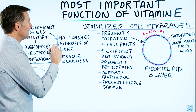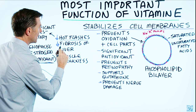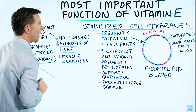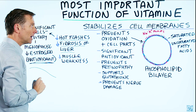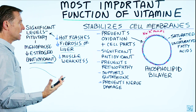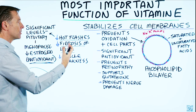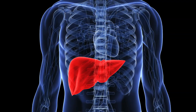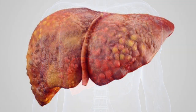Vitamin E has also been shown to decrease fibrosis of the liver because it's an antioxidant. Fibrosis occurs from all the free radical damage and inflammation in the liver, and without vitamin E it can continue — so it can help mitigate cirrhosis.